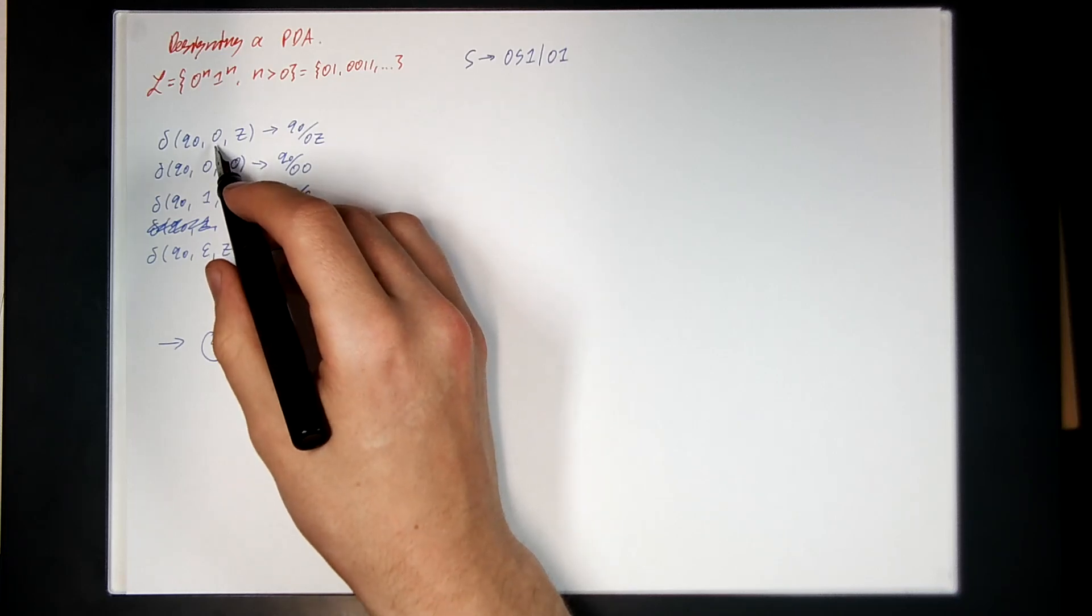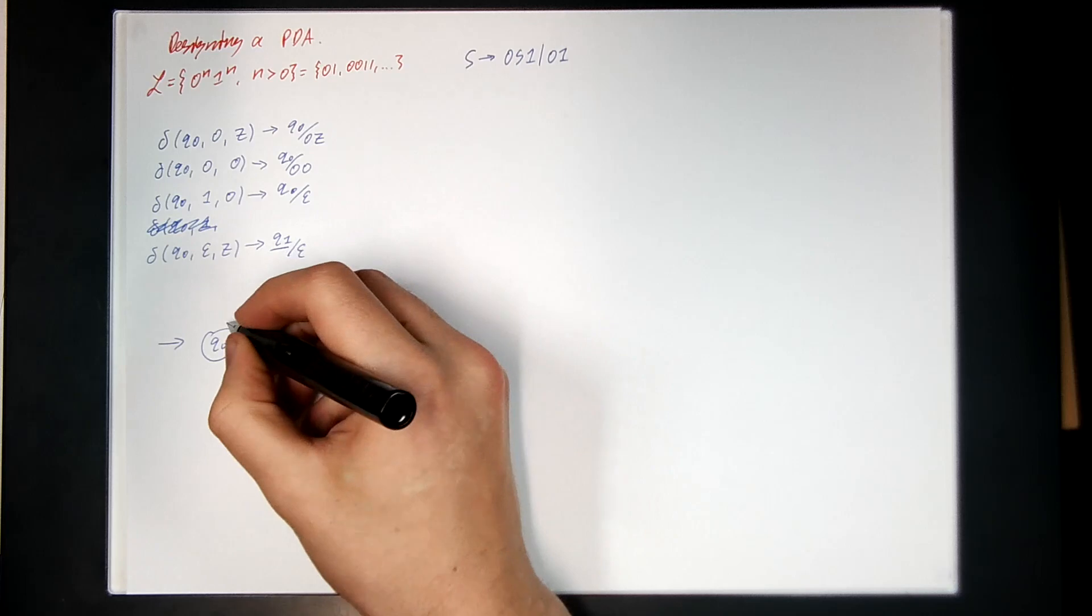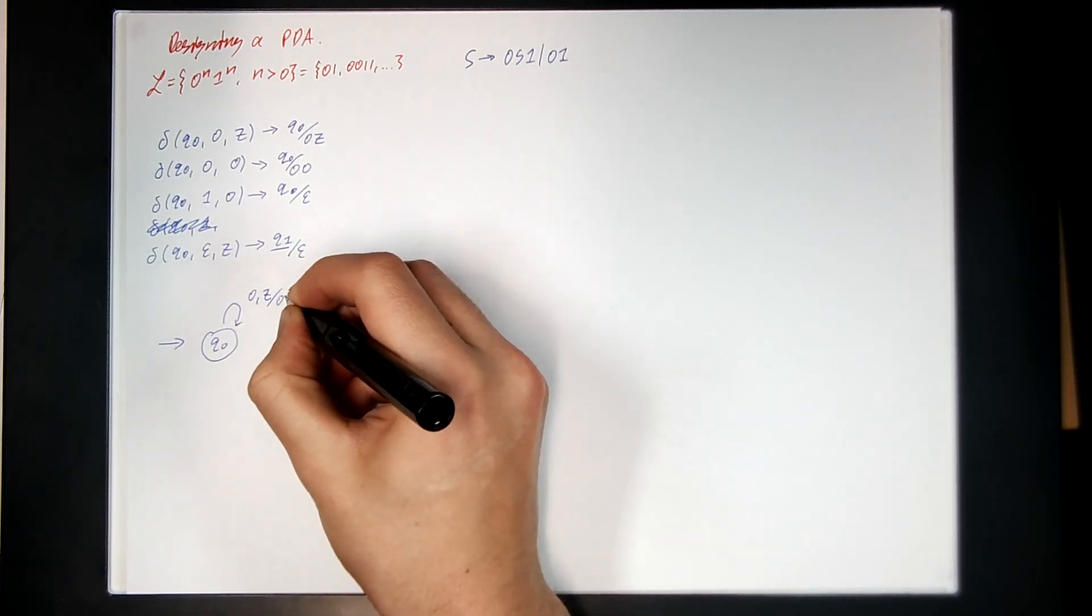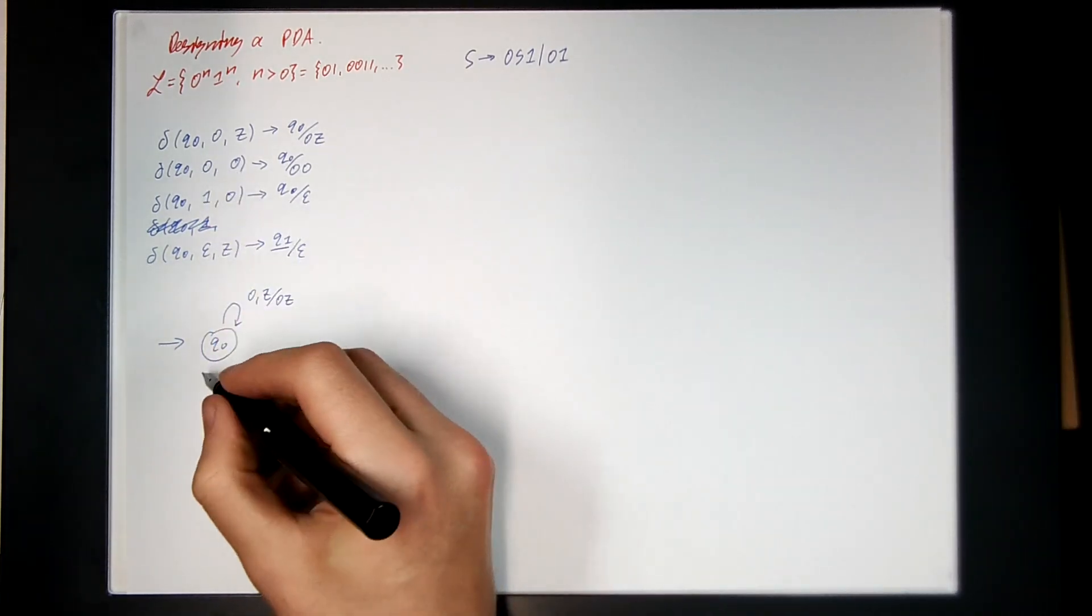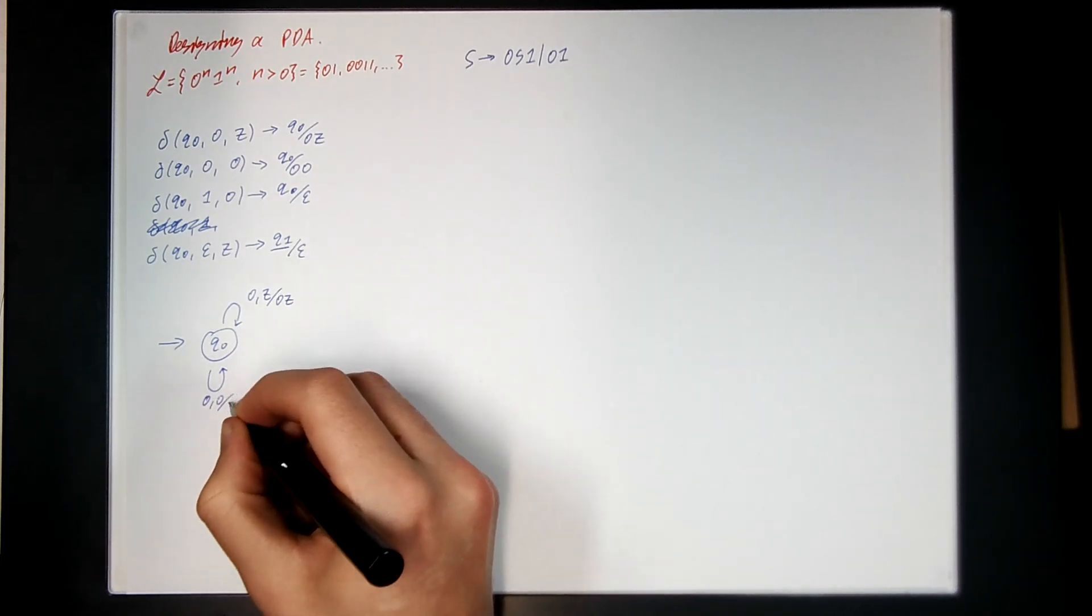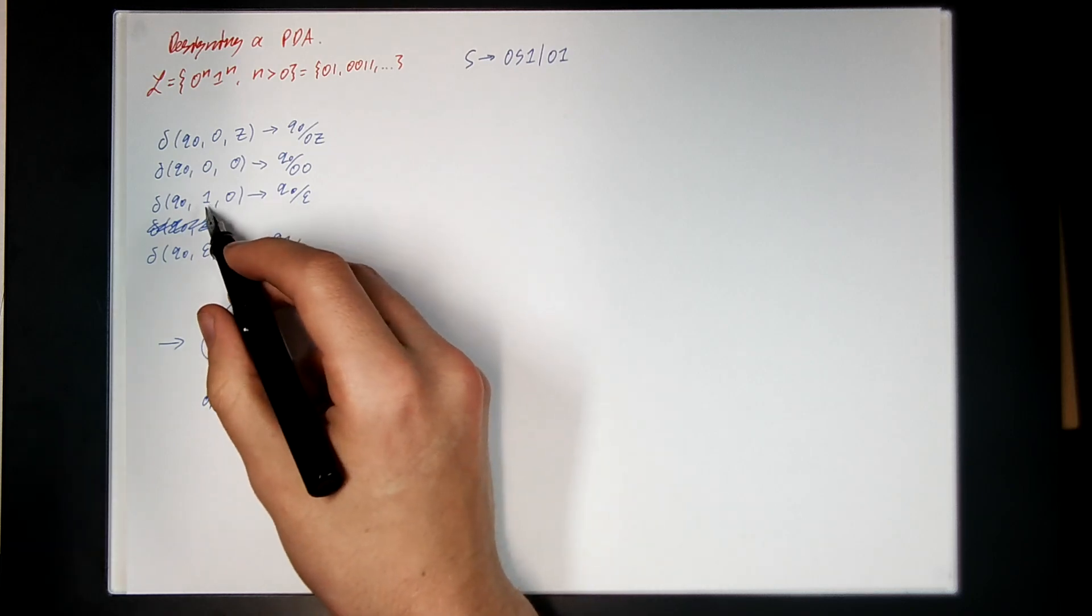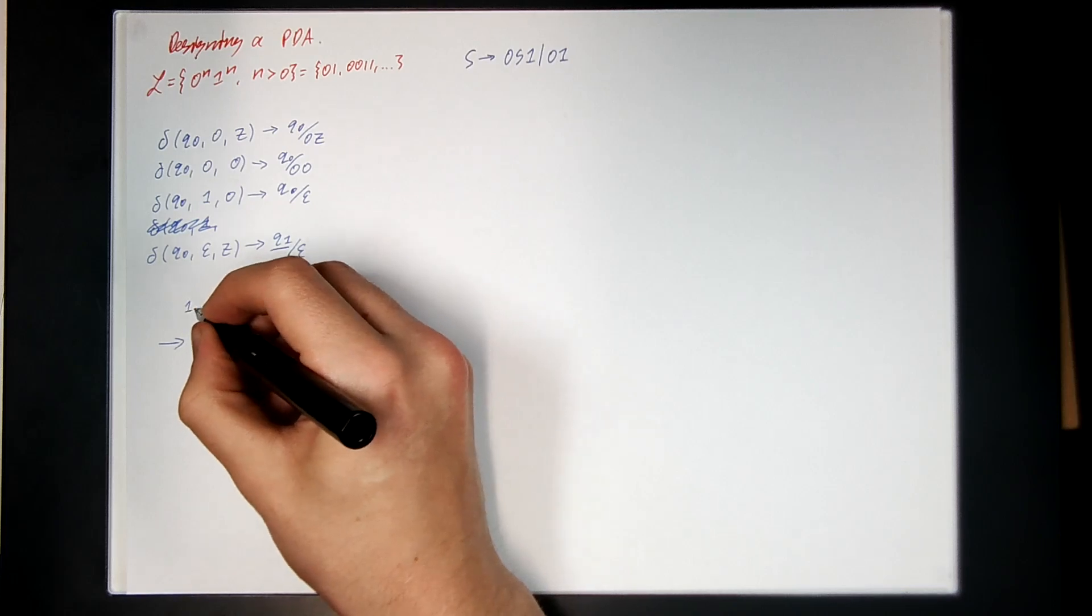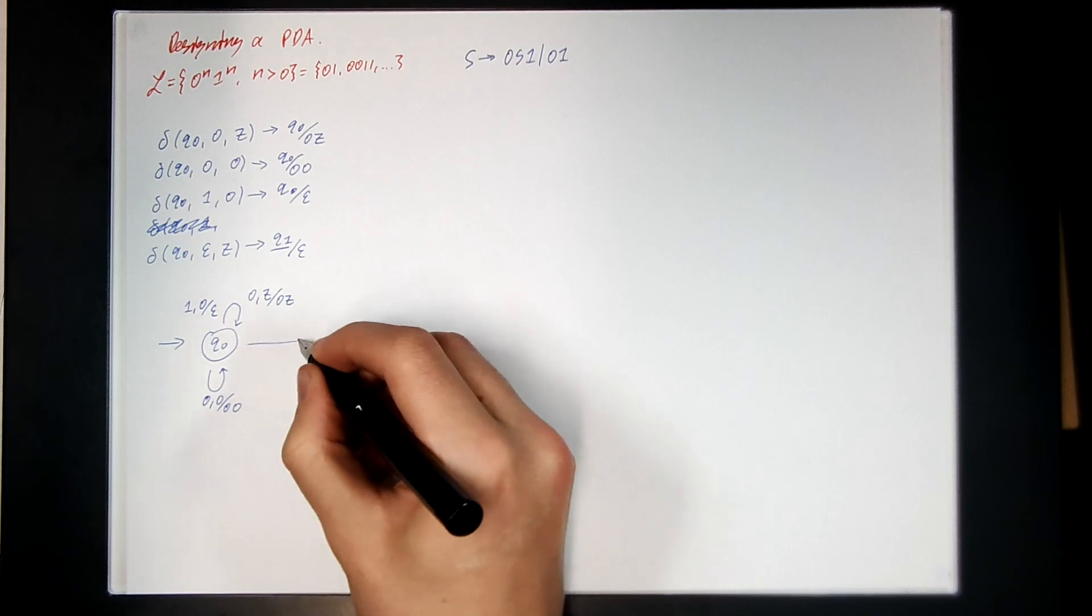So if I see a 0 on the input and a z on the stack, pushing both back, go back to Q0. So I see a 0z and then push 0z. If I see a 0 on the input and a 0 on the stack, pushing both. So 0 on the input, 0 on the stack, pushing both. If I see a 1 on the input and a 0 on the stack, delete the 0. And if the input's empty and the stack's empty, transition to Q1 and accept.